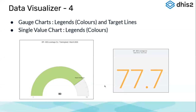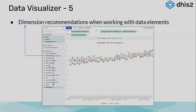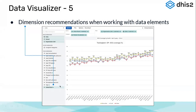Single value charts came up in version 2.33 but did not initially support legends or colors. From version 2.34 onwards they have the option to add colors, which was used extensively for COVID grading — putting positive cases in red, active cases in orange, recoveries in green, and deaths in gray — symbolizing the data with different legends available in the system.